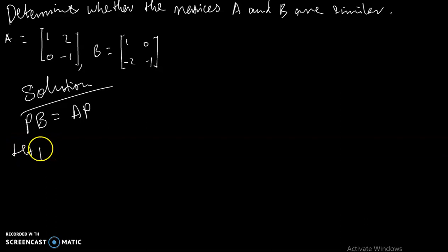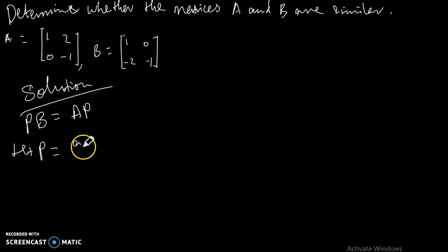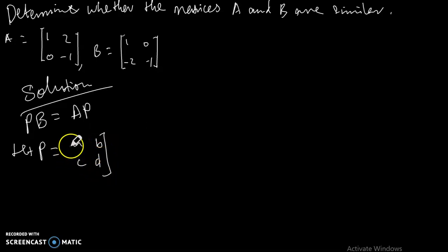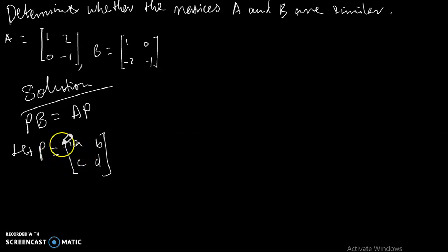We introduce matrix P and let P be given as [A, B; C, D]. This is our matrix P and we want to determine that it is indeed similar.